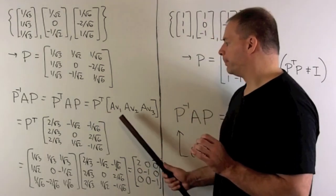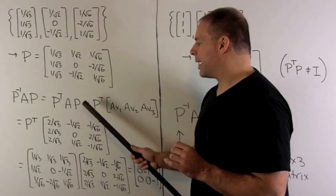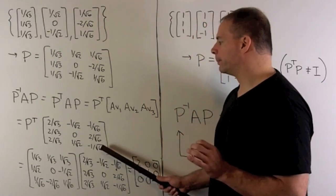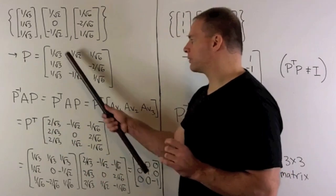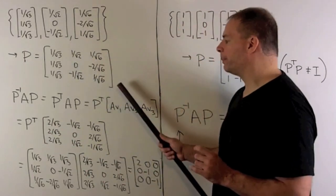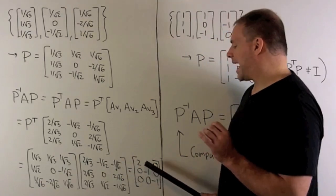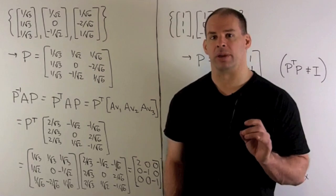For A times P, we're going to have 2 times the first vector, minus 1 times the second vector, minus 1 times the third vector. Then we multiply by P transpose, so we just flip our matrix across the diagonal. We work it out. We get the diagonal matrix with entries 2, minus 1, minus 1 on the diagonal.